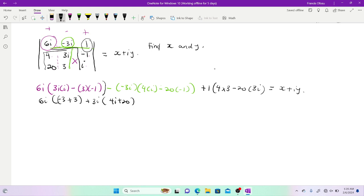Then when I come here, plus my 1, and here 4 times 3 is 12 minus 6i is equal to x plus iy. Now at this point this is zero, so I'm going to have 0 times 6i plus 3i times this.